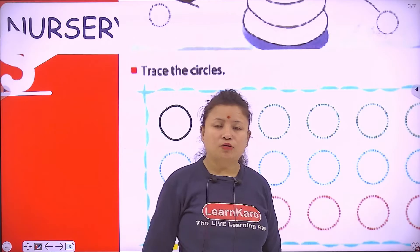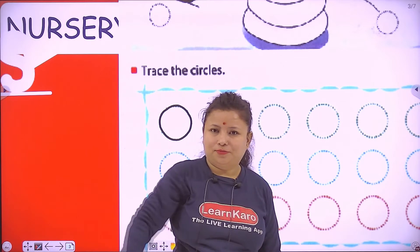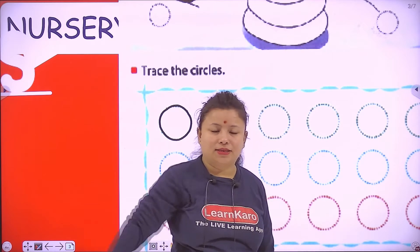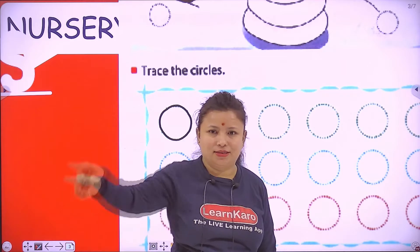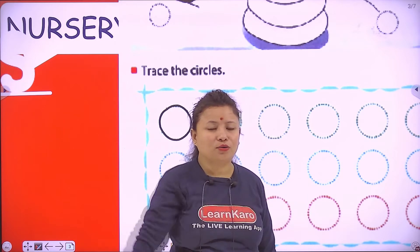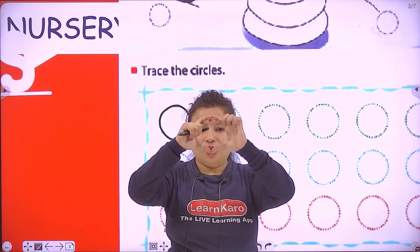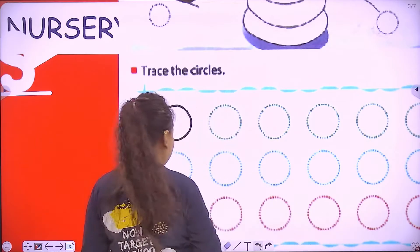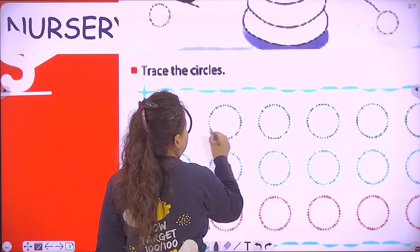Now make a circle in the air. How to make it? Like this! Draw a circle in the air like this. A circle goes round and round. A circle goes round and round. So now let's start — let's complete this activity.